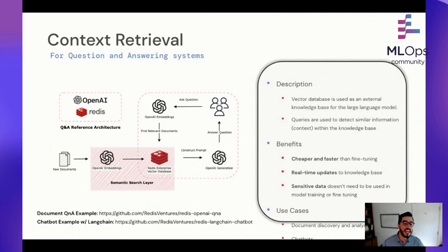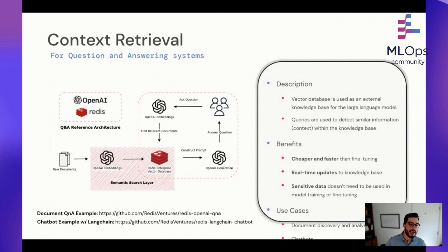The next stage is generation, where that context informs the large language model of something it may not know — something proprietary, something confidential, or something you wouldn't want in the fine-tuning process. This is also cheaper than fine-tuning, faster, and allows for real-time updates to the knowledge base. You wouldn't want to fine-tune on a millisecond timescale. Instead, have an external database where context is rapidly updating — say if you're making trades in the stock market and need the latest news, you'd need an external knowledge base updating at the pace of the stock market.